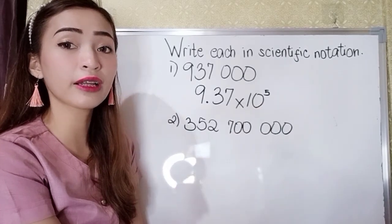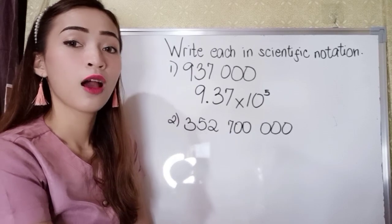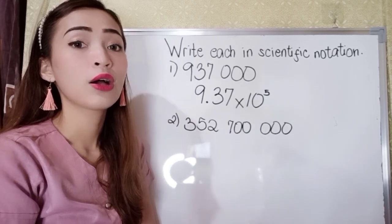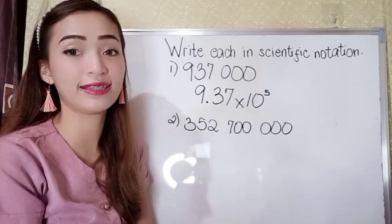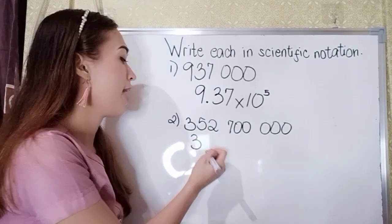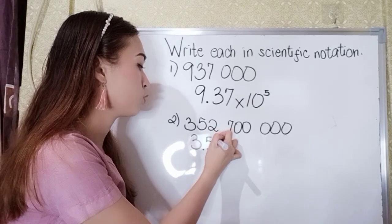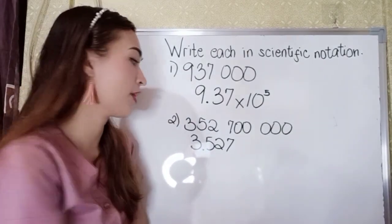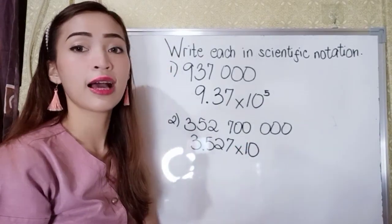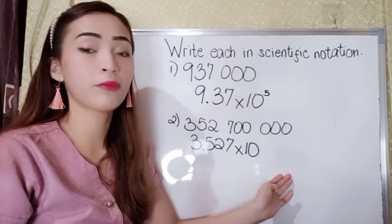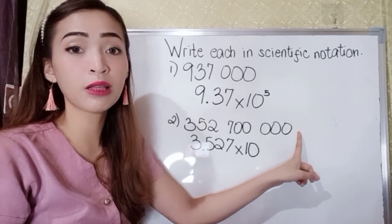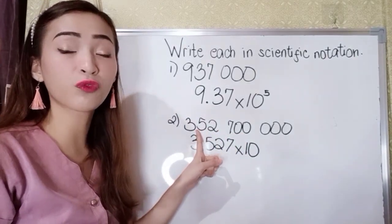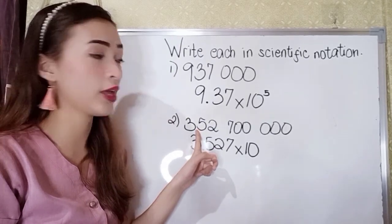For number 2, we have 352,700,000. Again, we write the decimal point on the right side of our first non-zero digit, which is 3. So we have 3.527 times 10. Since our given is a whole number, the decimal point is at the end, and we move it to the left. Counting: 1, 2, 3, 4, 5, 6, 7, 8. Since we move from right to left, this is a positive exponent — so that is 8. Answer: 3.527 × 10⁸.